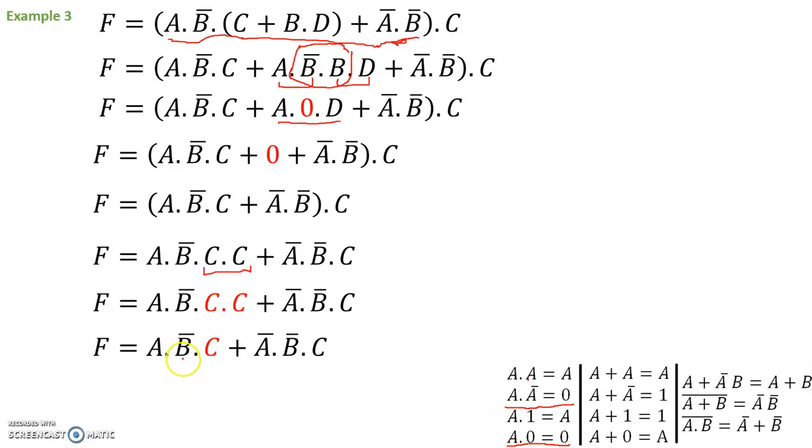I have A, ANDed with NOT B, C. OR NOT A, NOT B, C. What can we take common here? I see NOT B, ANDed with C. NOT B, ANDed with C. Let's take that out. We'll have A from the first term and NOT A from the second term, OR together. A ORed with NOT A. And that whole thing is ended with NOT B, C.